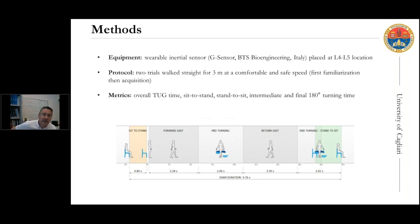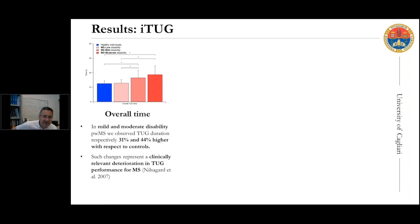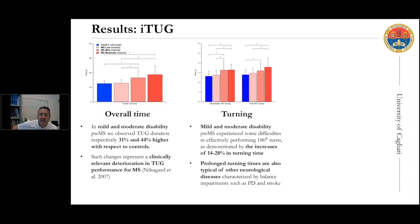For this research, we focused our attention on the time of the seat-to-stand, gait, turning, and stand-to-seat phases. The overall Timed Up and Go time was significantly higher in mild and moderate disability people with MS — respectively 30 to 44 percent higher with respect to healthy individuals — and such changes represent a clinically relevant deterioration in TUG performance according to the existing literature.